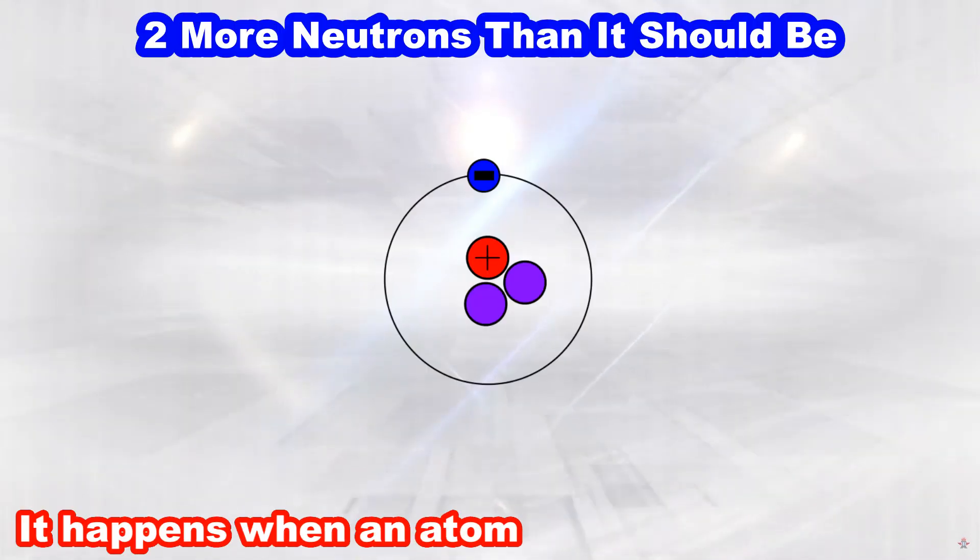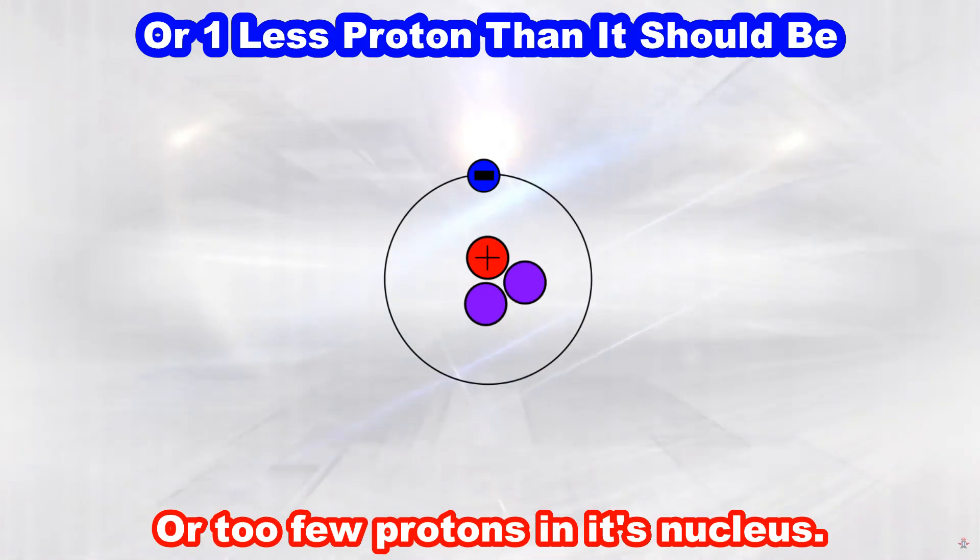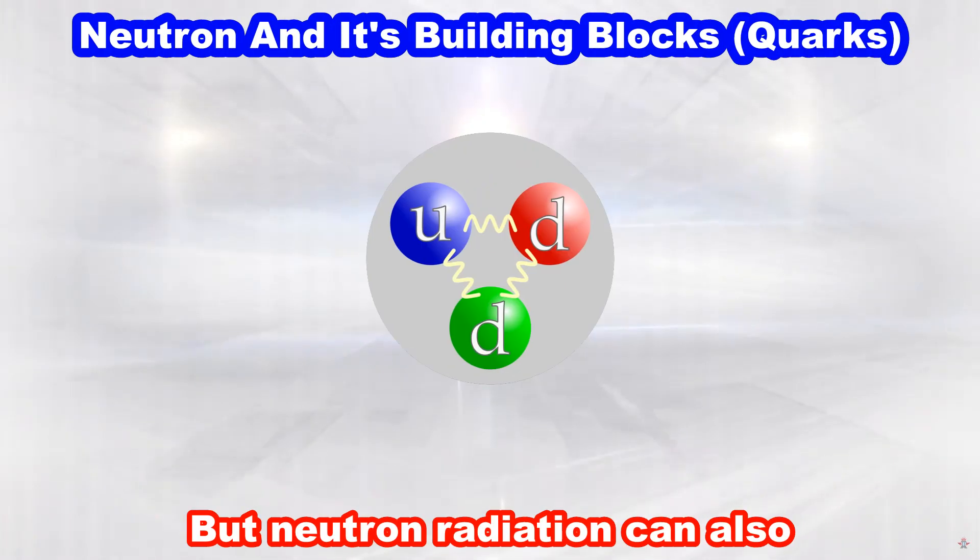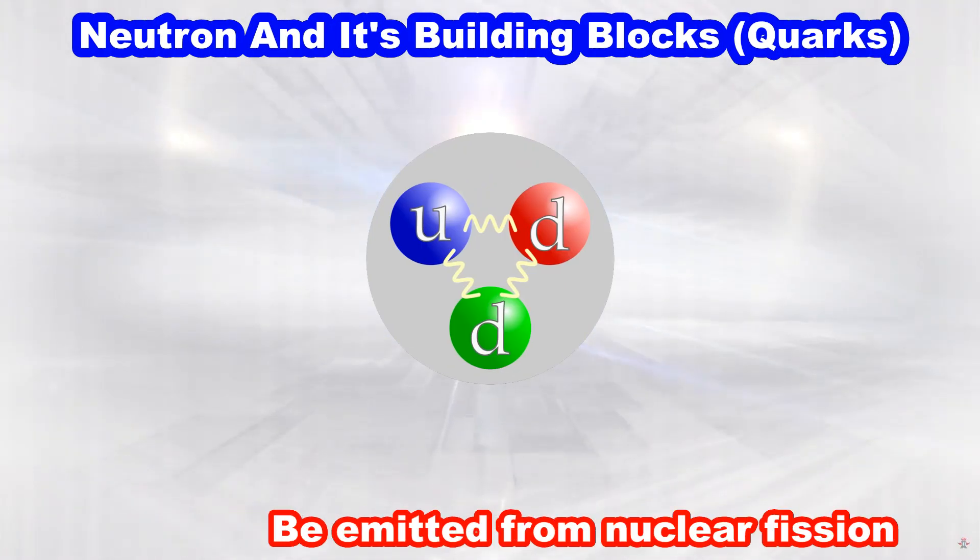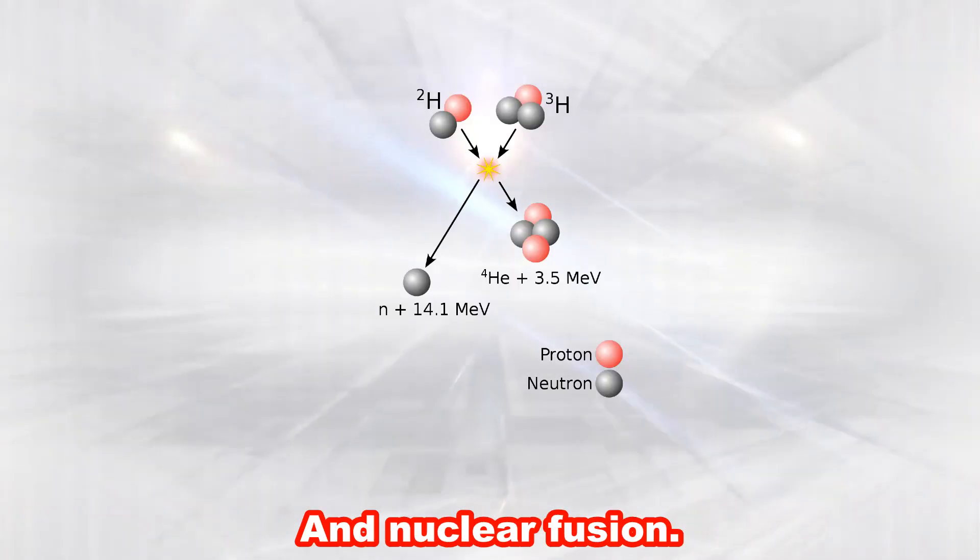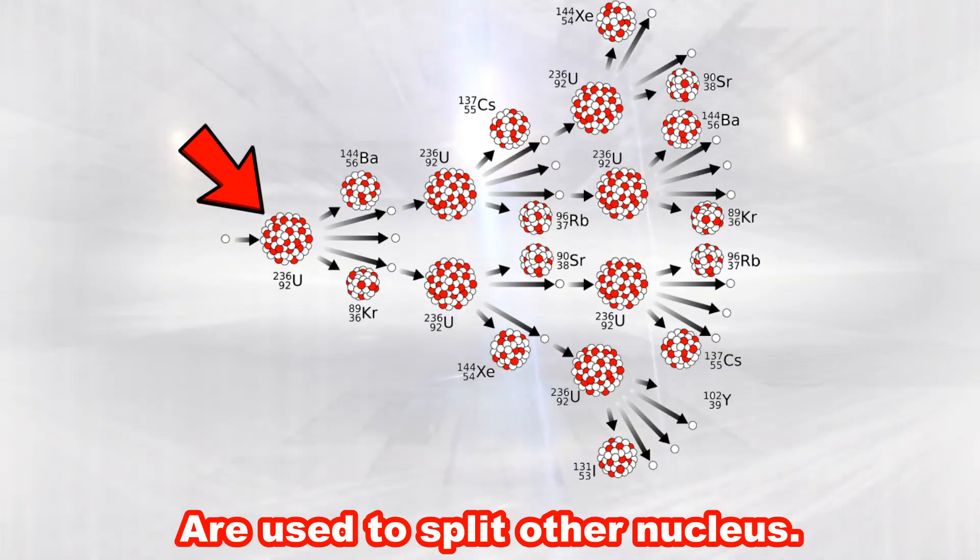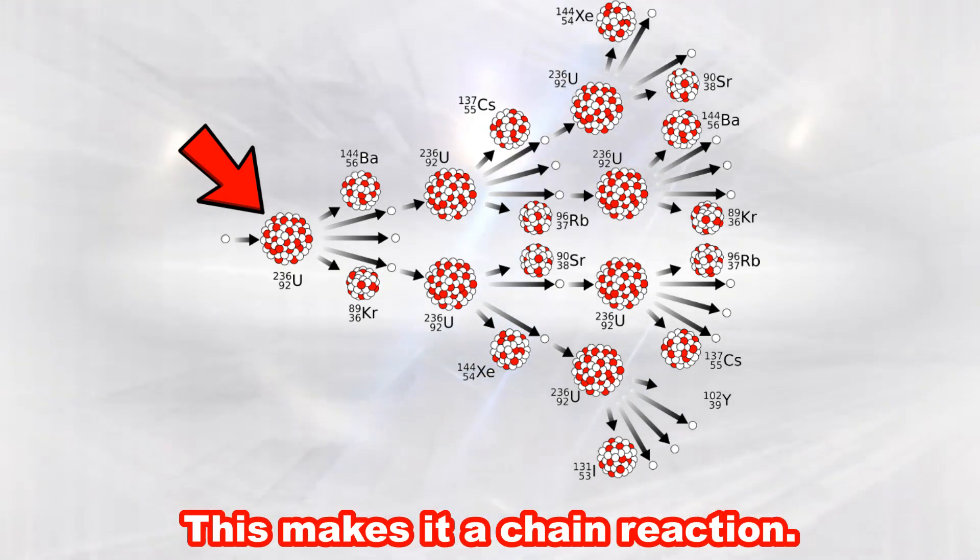It happens when an atom has too many neutrons or too few protons in its nucleus. But neutron radiation can also be emitted from nuclear fission and nuclear fusion. This is because the neutrons are used to split other nucleus. This makes it a chain reaction.